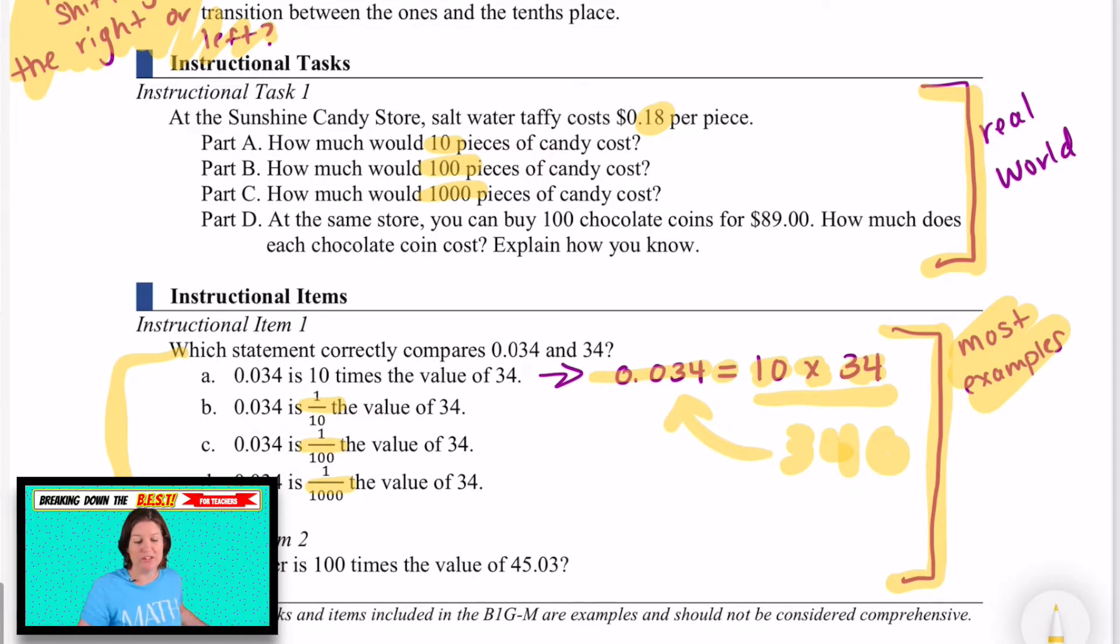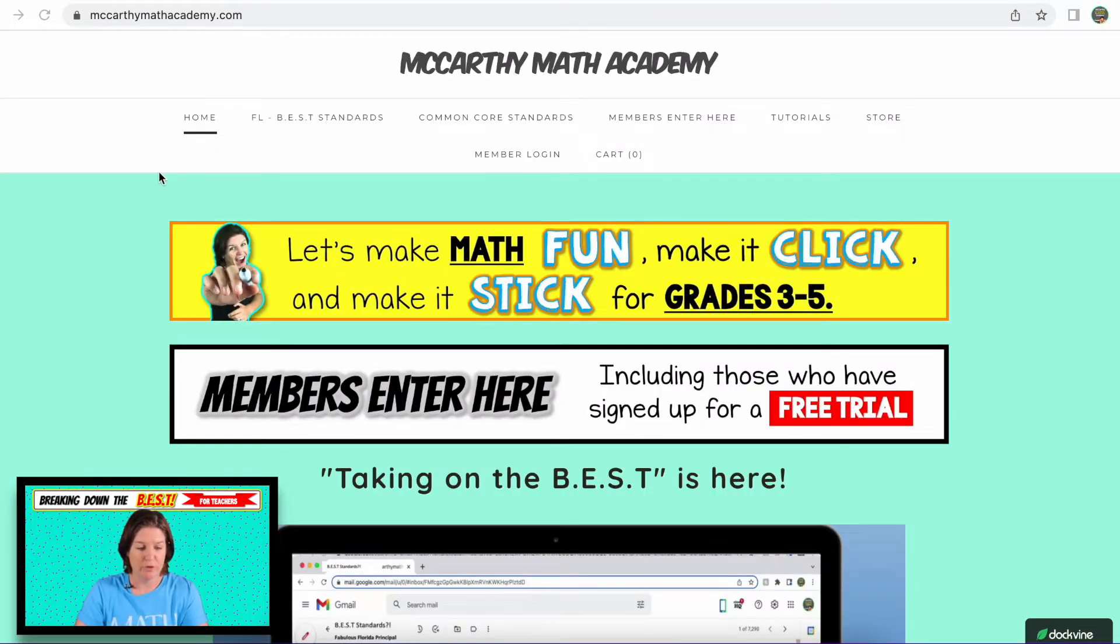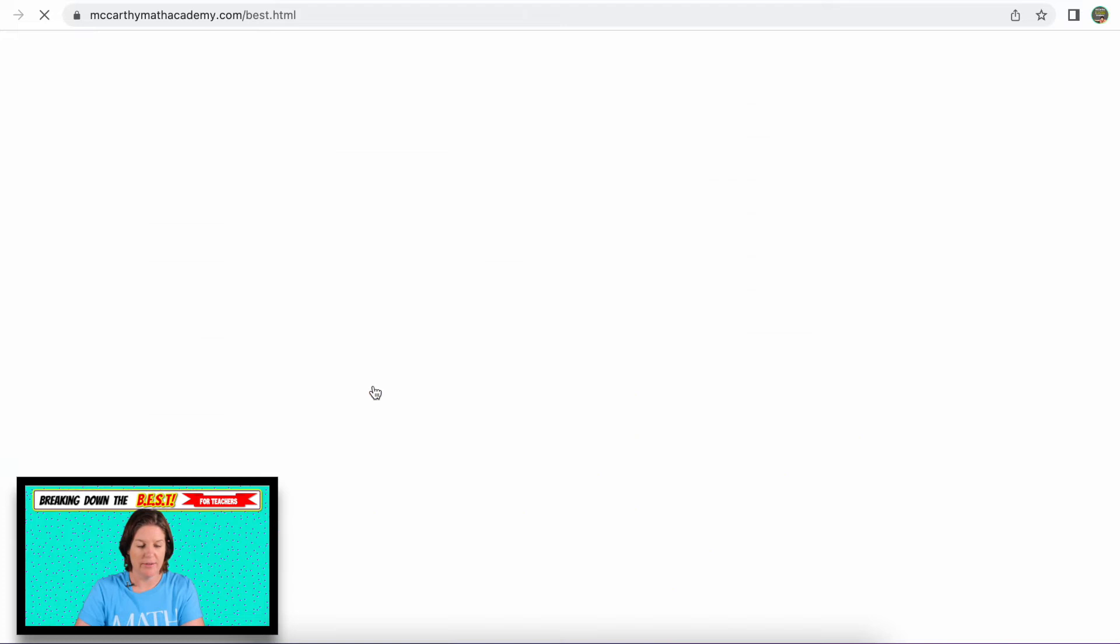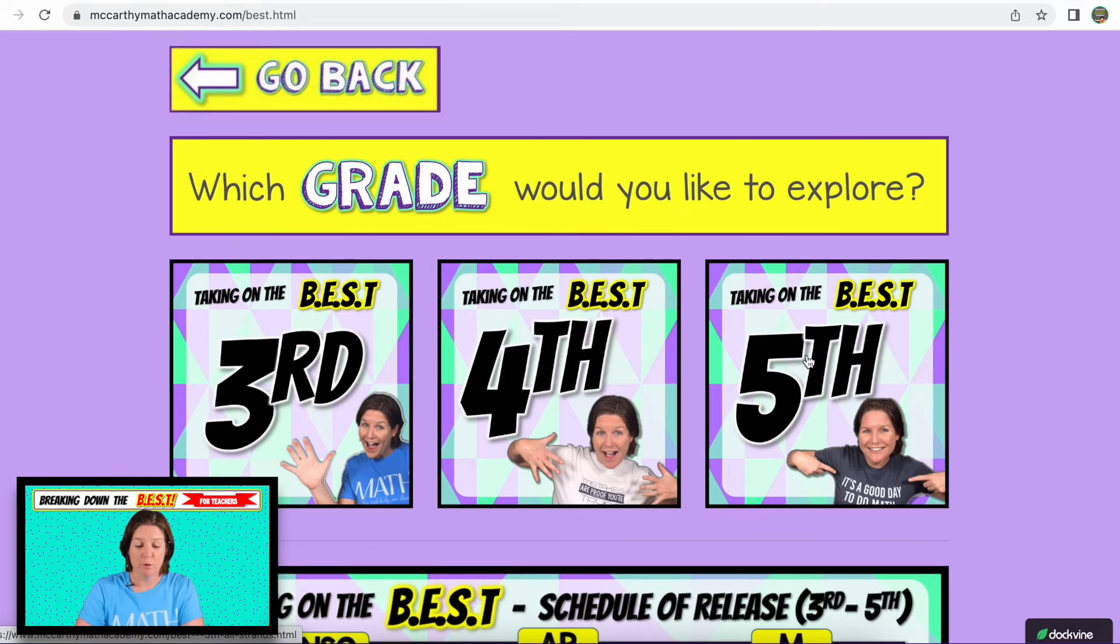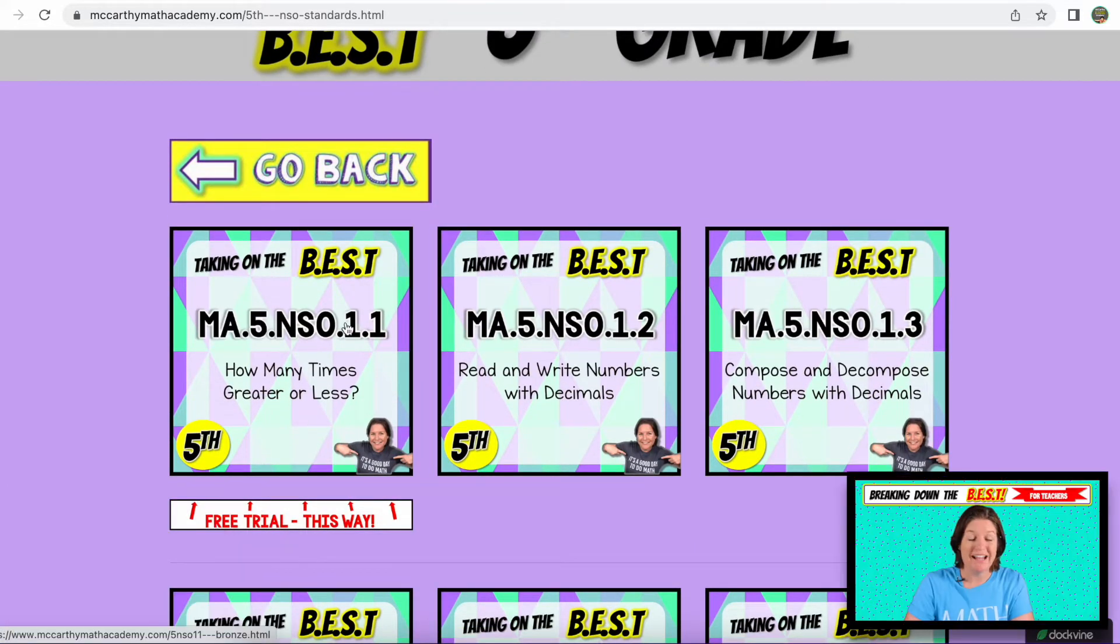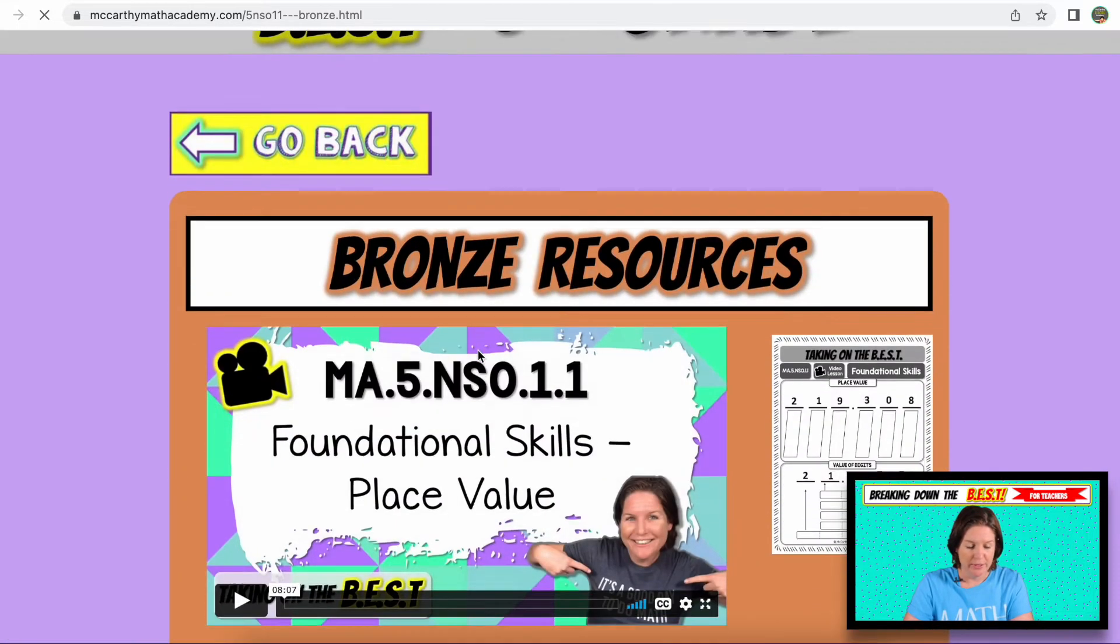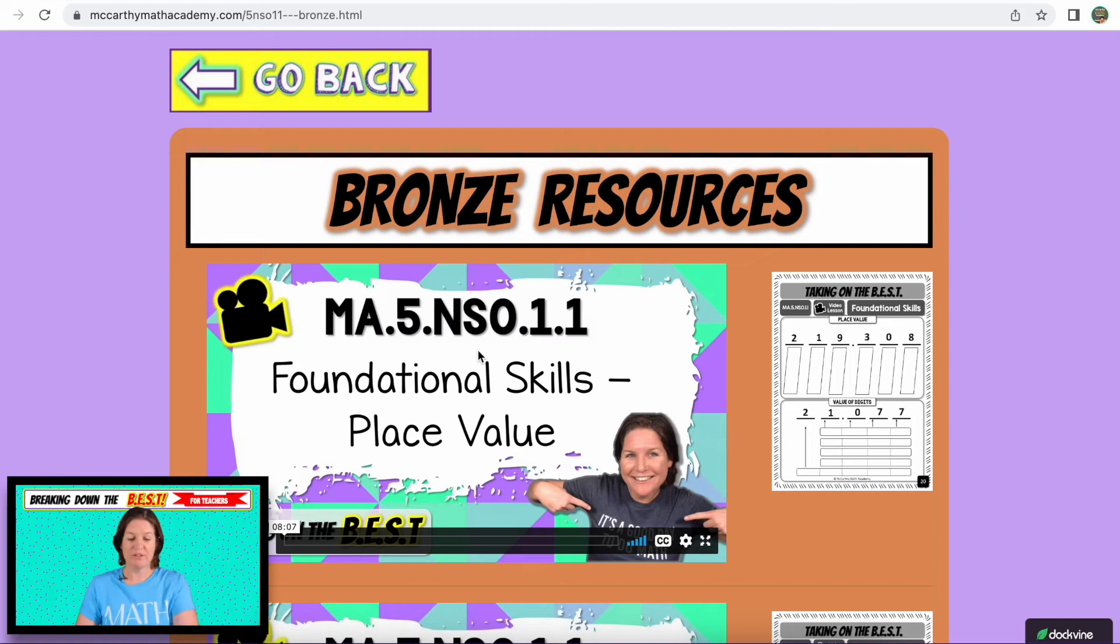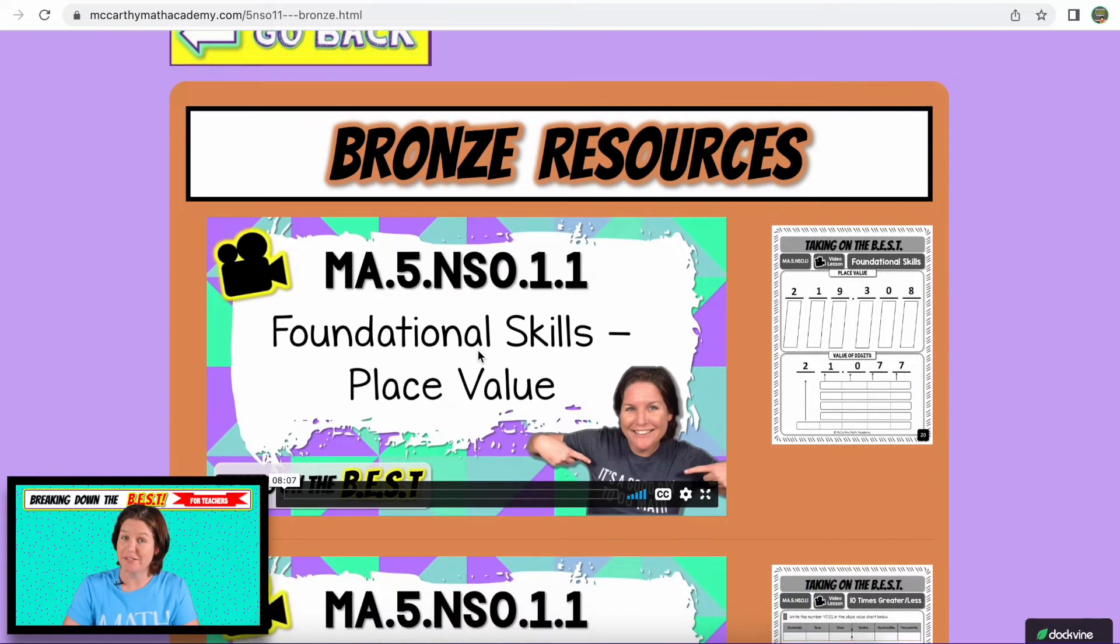Now let's go ahead and see what you have access to that strategically aligns with the standard that we're working on today. So if you're at McCarthy Math Academy, you make sure you go to members enter here, Taking on the Best, which grade are we working on? Fourth grade, not fourth grade, we're on fifth grade, but I was just thinking that I do want to show you a fourth grade standard that might help you to explain what's happening in fifth grade. So hopefully I'll remember to go back to that. NSO.1.1, and actually everybody has access to all of the resources here because this is the free trial as well. So even if you've only signed up for the bronze resources for this one, you have access to all of them, which is pretty cool.